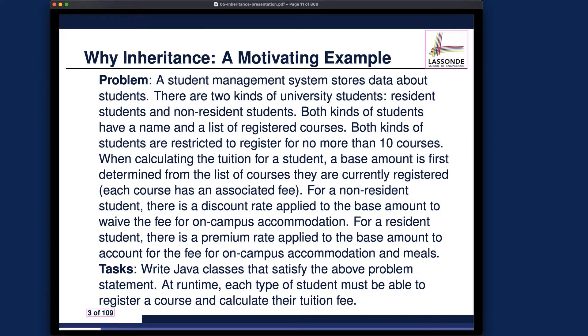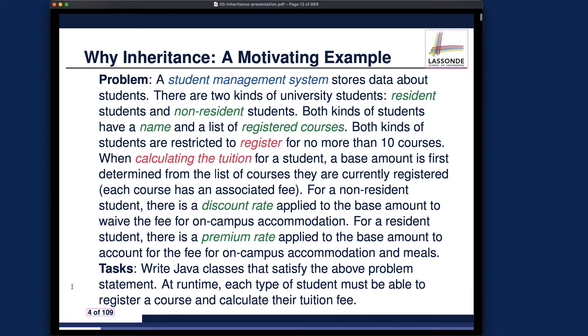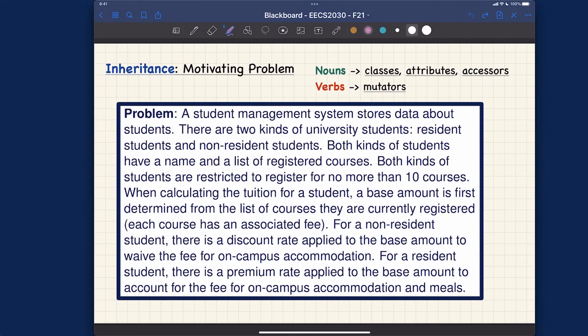Assuming you've thought about it, you should now have a sketch of your initial design of Java classes, attributes, and methods. Let's now compare your solution with my take. I identified the following key phrases in the text — each one will be turned into either a class, an attribute, or a method, either accessor or mutator. Let's go into more detail about how to identify key phrases, and then we'll speak about the first two designs without using inheritance.